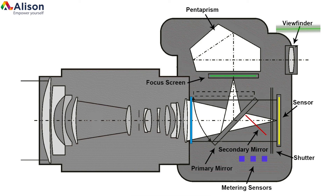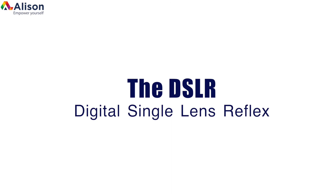The secondary mirror reflects light downward, which allows the camera to determine exposure or to perform autofocus. Below this box of mirrors are sensors that the camera uses to determine metering, to properly capture exposure, and for autofocus.